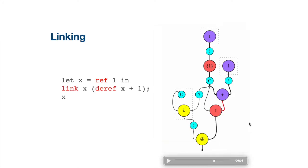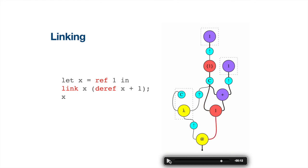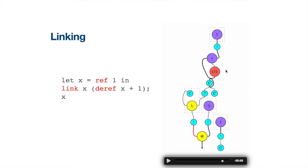This example shows the semantics of the link operator. We have a cell X initialized by 1, and the link node's right-hand side is the new dependency while the left-hand side is the cell to be modified. The token goes to the right-hand side to evaluate the new dependency, and then to the left-hand side to retrieve the cell. When the token comes back to the link node, the dependency is relinked so that cell X becomes dependent on itself plus 1.